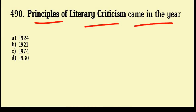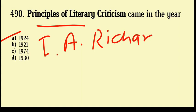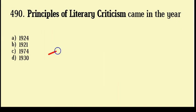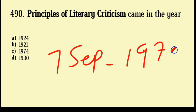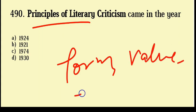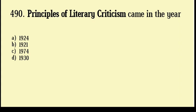Principles of Literary Criticism came in the year: 1924, 1921, 1974, 1930. Correct answer: Option number A, 1924. It was written by I.A. Richards — full name Ivor Armstrong Richards — born 26 February 1893, died 7 September 1979. He was an educator and literary critic. In Principles of Literary Criticism, Richards discussed subject matter, form, value, rhythm, literary infractionism, allusiveness, and brief reading.